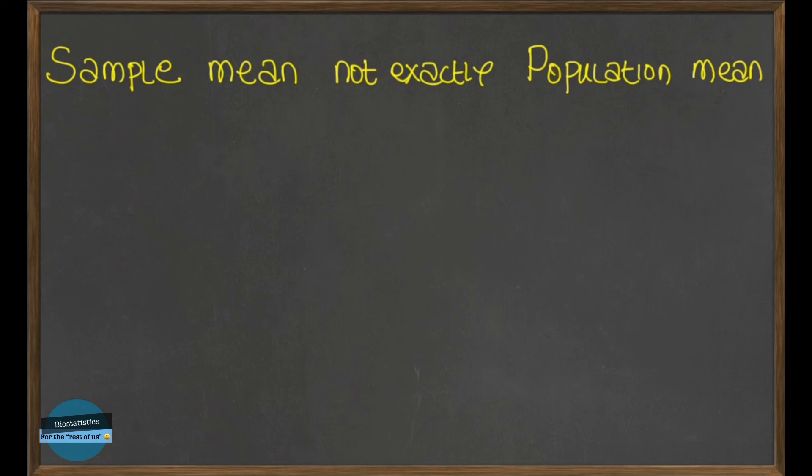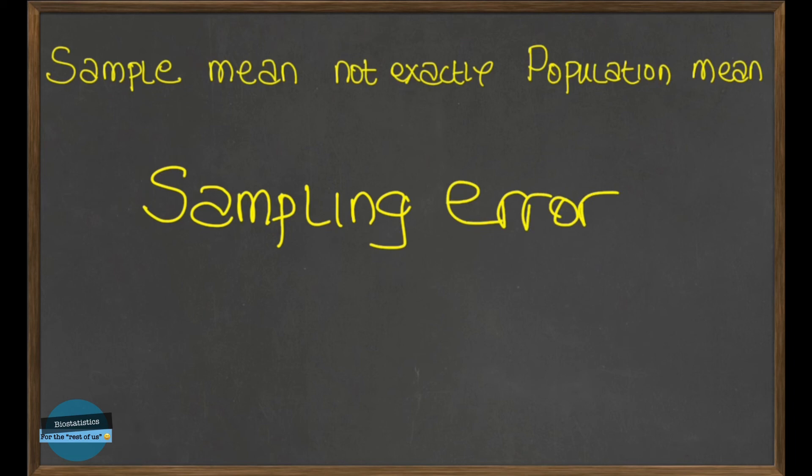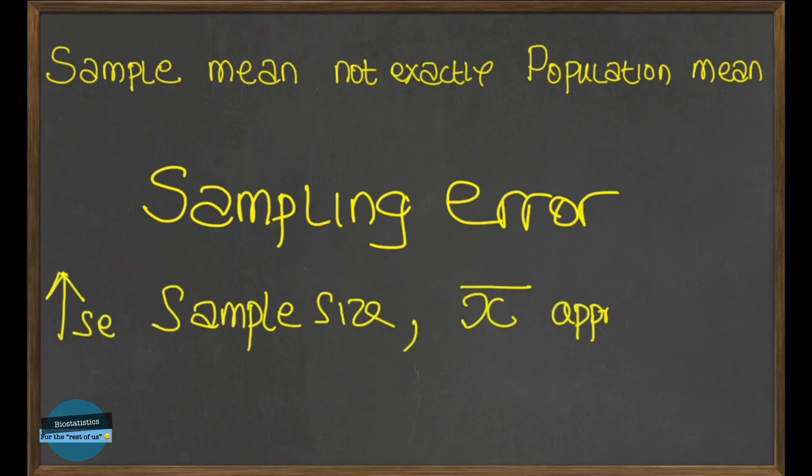And this is due to what is called sampling error, which we'll be discussing in another video. A sample cannot be a perfect representation of the population. And so as we increase the sample size, the sample mean will approach the population mean. In other words, as the number in the sample increases, as n increases in the sample, as small n gets closer to the capital N, the closer the statistic gets to the parameter.